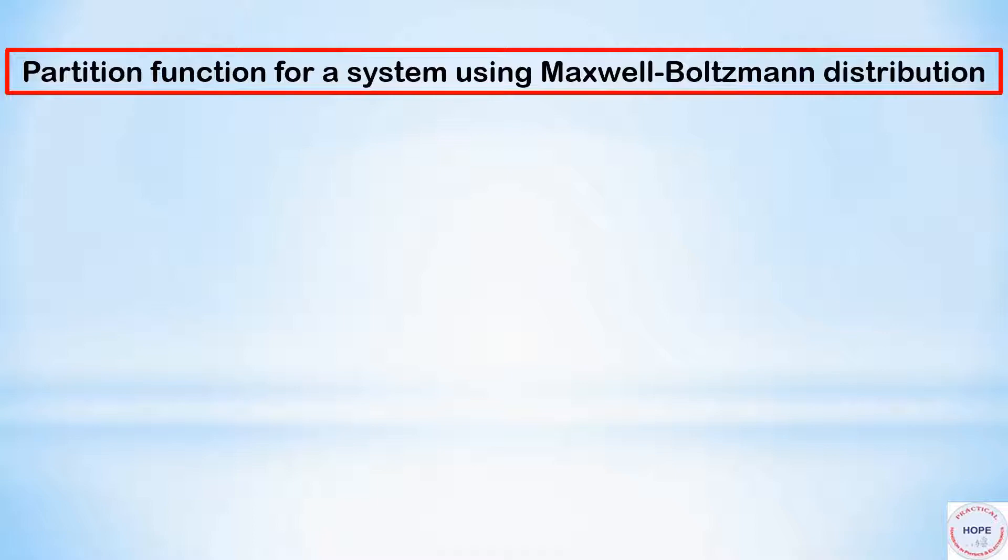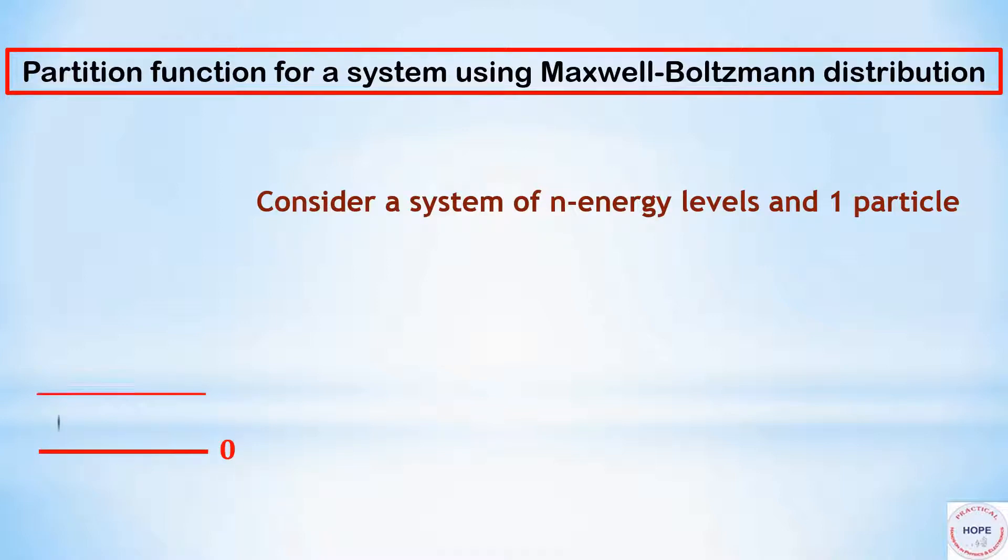So first, partition function for a system using Maxwell-Boltzmann distribution. Consider a system of n energy levels and one particle. This is the zero energy level and the energy difference between two consecutive levels is capital E. So energy of the first level will be E, second level will be 2E, and so on.